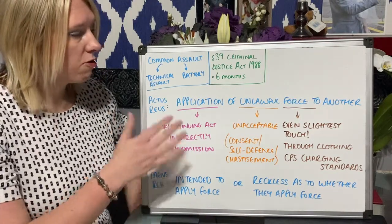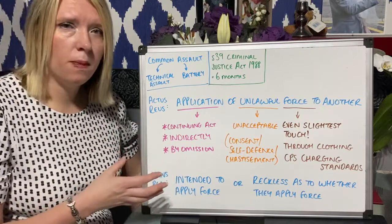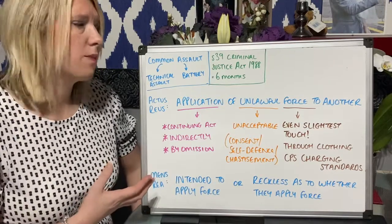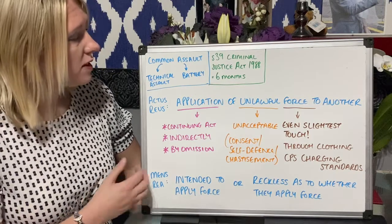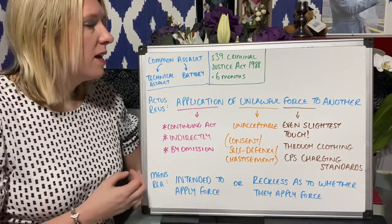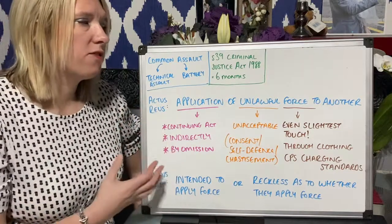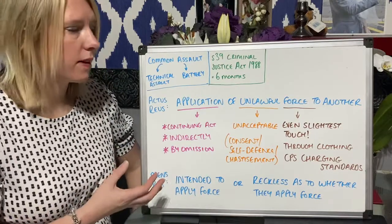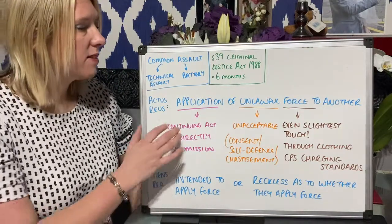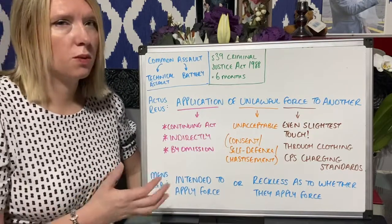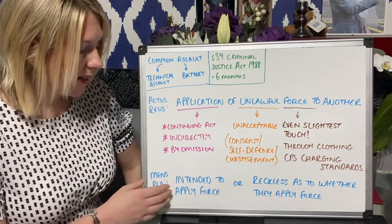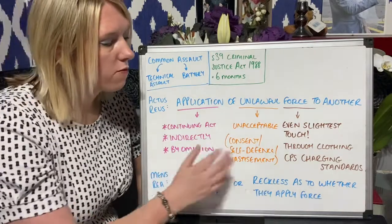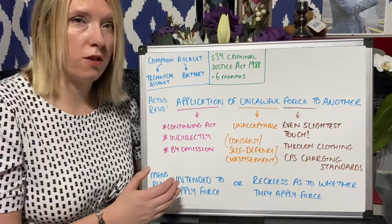Because assault and battery tend to go together, students can sometimes get them mixed up. What I want to do is go through the actus reus and mens rea — define and explain the offence with case examples. The definition of battery is the unlawful application of force to another person, and you have to intend or be reckless as to that occurring. So the actus reus is the application of unlawful force to another person, and the mens rea is either intending to apply unlawful force or being reckless as to whether you would apply unlawful force to another.